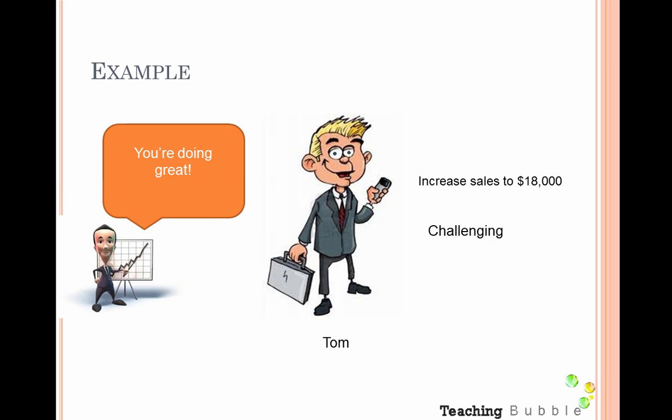Let's see if Tom's example meets the criteria. Is it challenging? He was selling $10,000 worth and now the target is $18,000 — that's quite a substantial jump, so yes, definitely challenging. Is it specific? Yes — $18,000 is specific, and it could be even more so with a timeframe. It's not just 'we want to increase sales.' Collaboration — yes, Tom had a real say in what the goal was, so that gets a tick too.